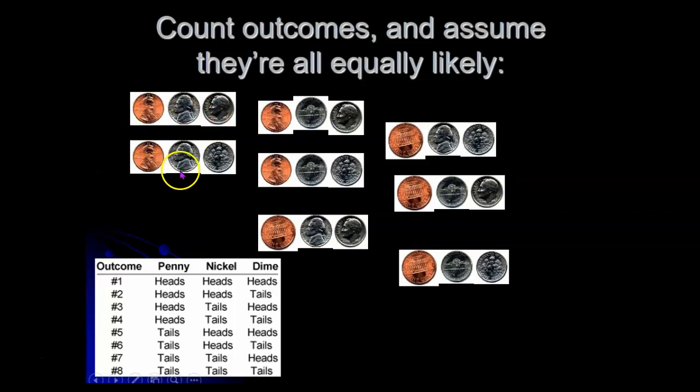Or the penny and the nickel could both be heads, but the dime could come up tails. Or you could get heads on the penny and the dime, but tails on the nickel. Penny could be heads, and the nickel and the dime could be tails. Could be tails, heads, heads. Tails, heads, tails. Tails, tails, heads. Or tails, tails, tails.